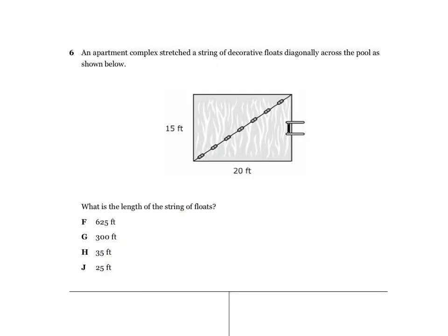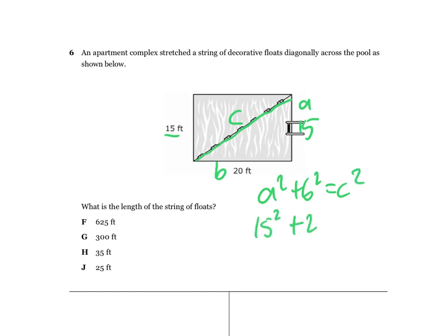On number 6, it's an apartment complex problem — stretch a string of decorative floats diagonally across the pool. This diagonal is going to be our side c. If one side is 15, then the other matching side is also 15. This is just the Pythagorean theorem. We'll call the legs a and b, and solve for c: 15 squared plus 20 squared equals c squared. Take the square root to find side c, then work it out from there.